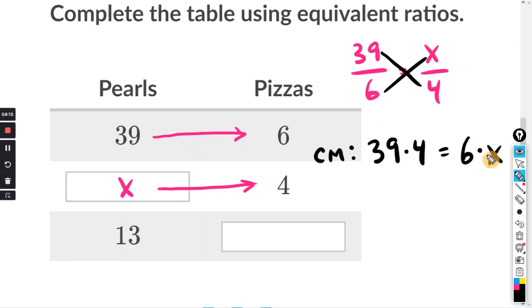Solving for X, the opposite of times 6 is divided by 6, so the 6 cancels. I'll do 39 times 4 divided by 6 on the calculator, and I get 26. So in place of the X, I will just fill in 26.